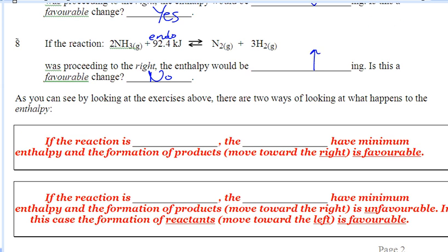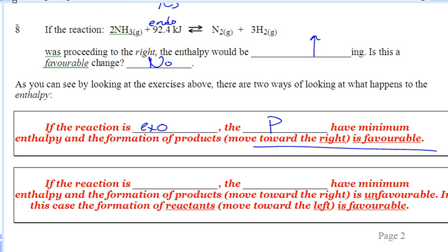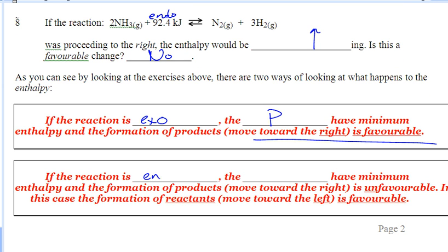So what we're trying to drive home here is: if a reaction is exothermic, the products have minimum enthalpy and the formation of products is favorable. If the reaction is endothermic, the reactants have minimum enthalpy and the formation of products is unfavorable — therefore they want to remain reactants. Small twist on something we already know.